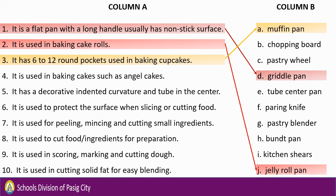Number 4: It is used in baking cakes such as angel cakes. Letter E — Tube Center Pan. Number 5: It has a decorative indented curvature and tube in the center. Letter H — Band Pan.